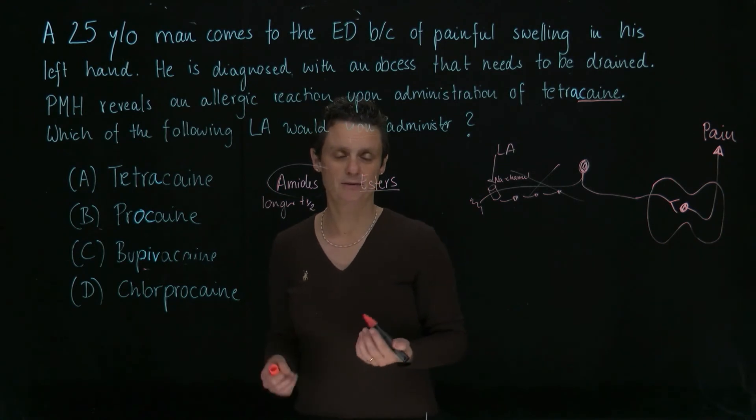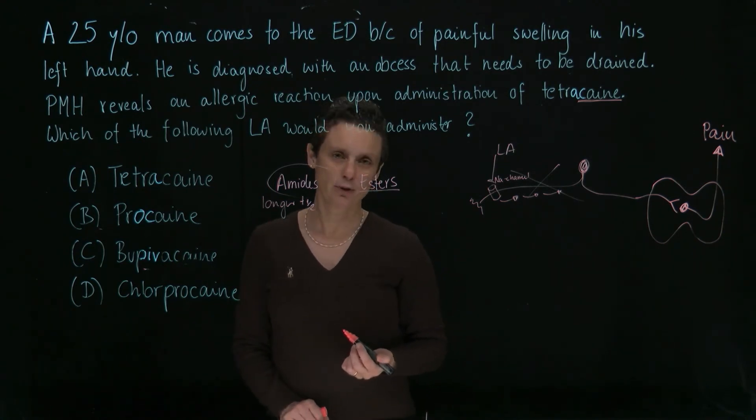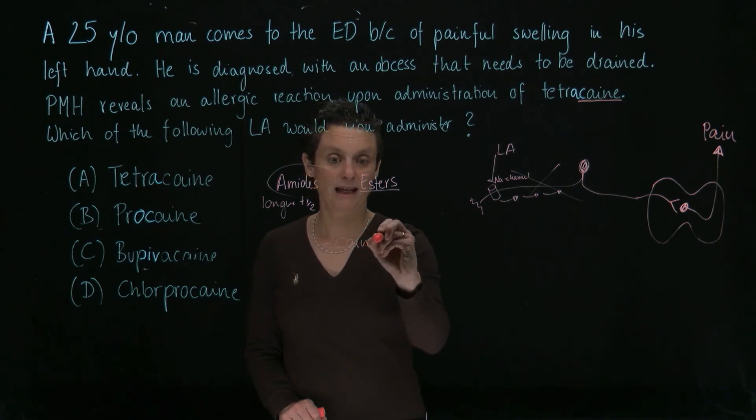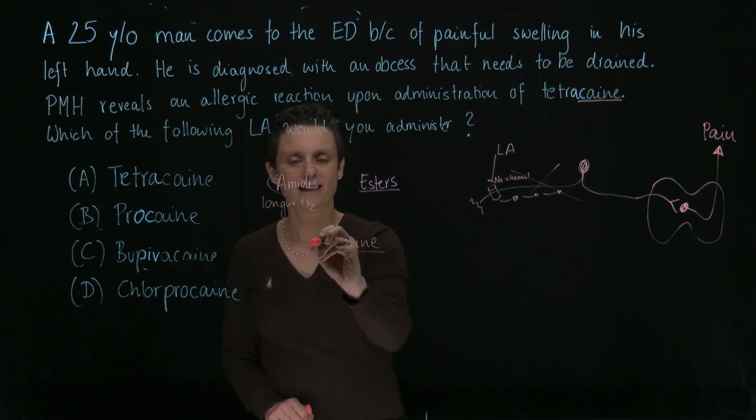How can we easily figure out which one is an amide, which one is an ester? Well, we already said local anesthetics all end in caine. And if you find an i in front of the caine, it's an amide.